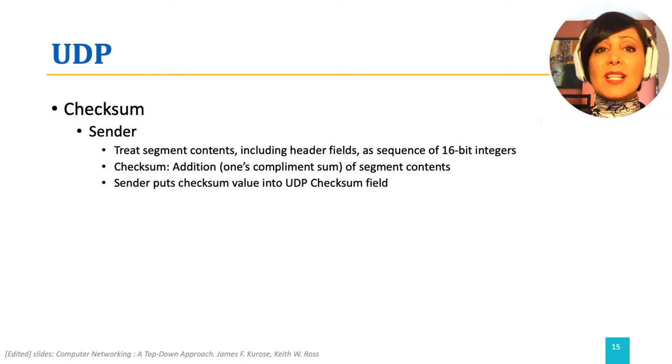UDP checksum is the once complement addition of all of the 16-bit words in the segment, including the header fields. Once complement means converting all the ones to zero and all the zeros to one. It is computed at the sender and added to the checksum field.